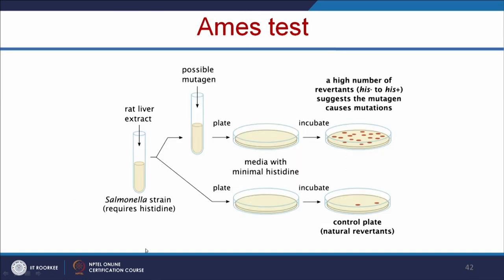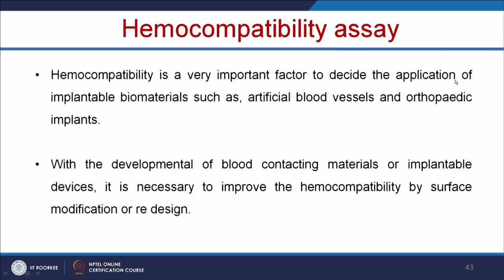Let us see what is the Ames test. We can use the bacterium Salmonella, which requires histidine for its growth. To this we add the possible mutagen — in this case, nanoparticles. The bacteria are grown in media with minimal histidine, and in the presence of a possible mutagen, if a mutation occurs, it converts the bacteria from histidine-negative to histidine-positive and the bacteria will grow more on the plate. If more bacteria are growing compared to the control plate, where only a few colonies were present, it means the nanoparticle may have induced a mutation in the genetic material.